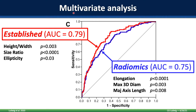It's a similar story in the multivariate analysis — the stepwise forward feature selection. When I applied stepwise forward feature selection to established features, it recruited three features and built a model with an AUC of 0.79. Applying the same approach to radiomics features, it recruited three features and built a model with AUC equal to 0.75 — once again inferior to the established features.